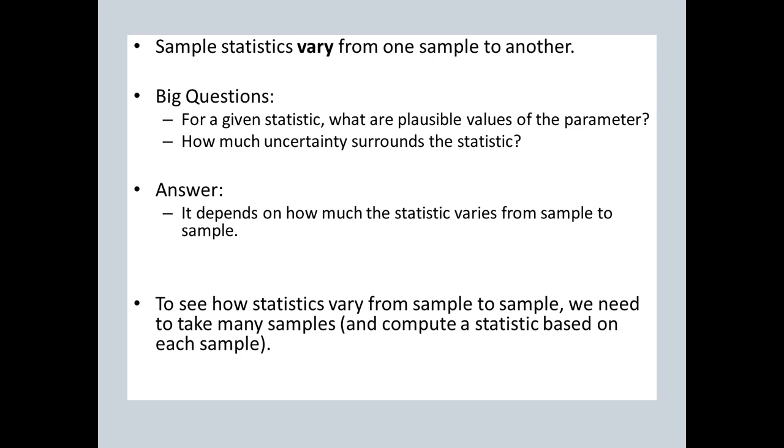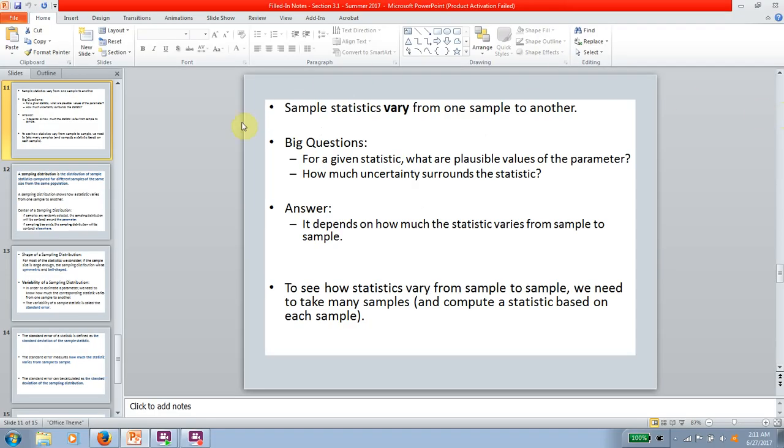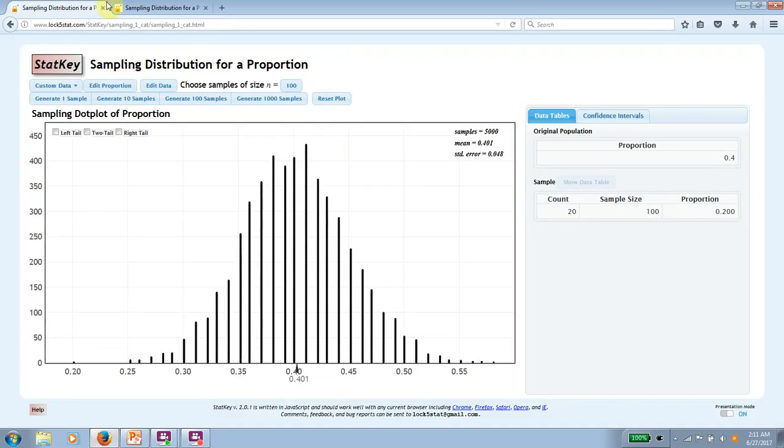And in order to do that, it sounds like we would need a lot of samples, rather than just one or just a handful. To see how statistics vary from one sample to another, we need a lot of samples, so that way we get a lot of statistics, and maybe we could quantify it. What I mean by that is what if we had something like this? So what I've got here, I specified a population proportion of 0.4, and then I took 5,000 samples of size 100.